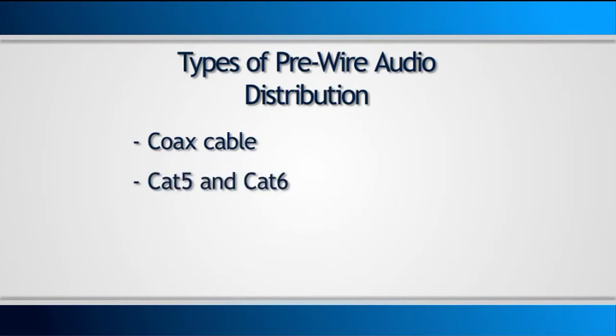Then you have Cat5 and Cat6, which is typically used when you're using a balanced audio system. It's fairly inexpensive and can be used for many applications. There is an added transceiver cost to getting the audio onto the Cat5 and Cat6, and it must be done carefully to prevent electrical noise.